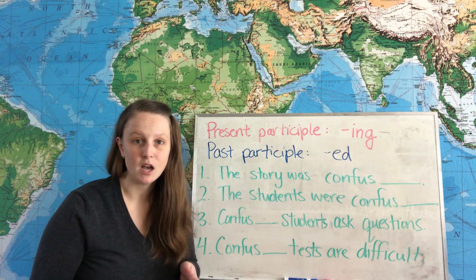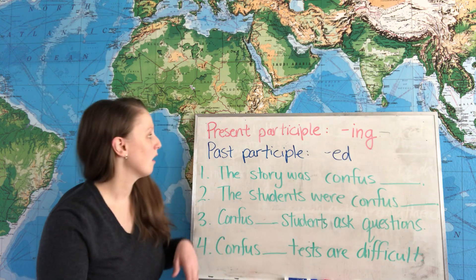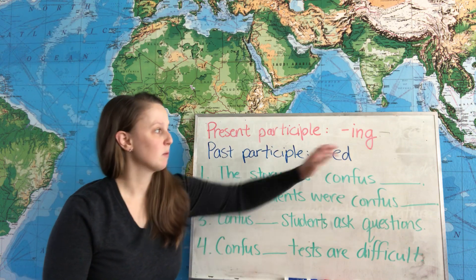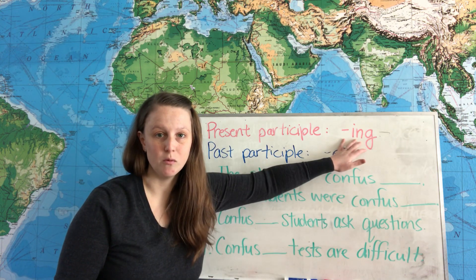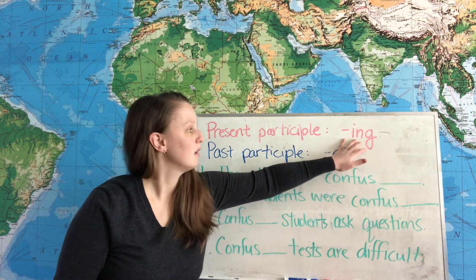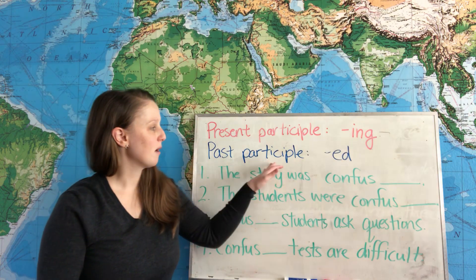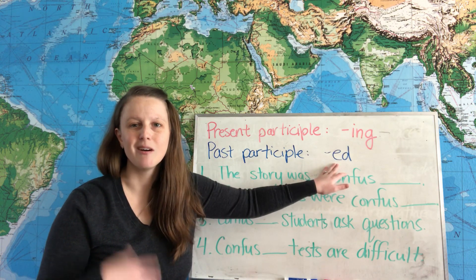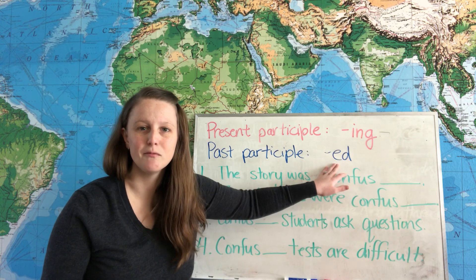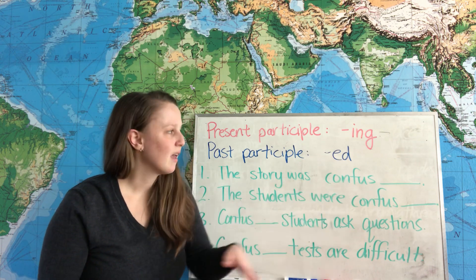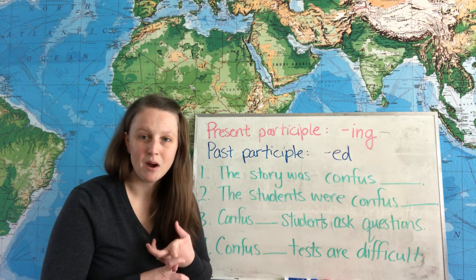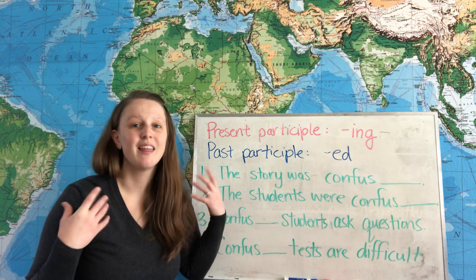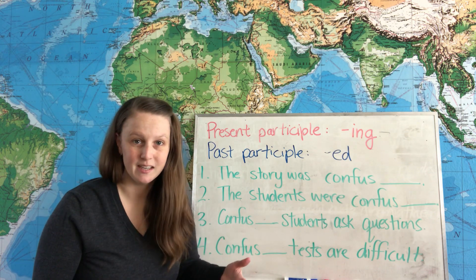First, let's talk about our terms. When we talk about a present participle, we're talking about that -ing form of the verb. And when we talk about the past participle, we're talking about that -ed or other past participle form of the verb. We can use these present participles and past participles like adjectives in English.